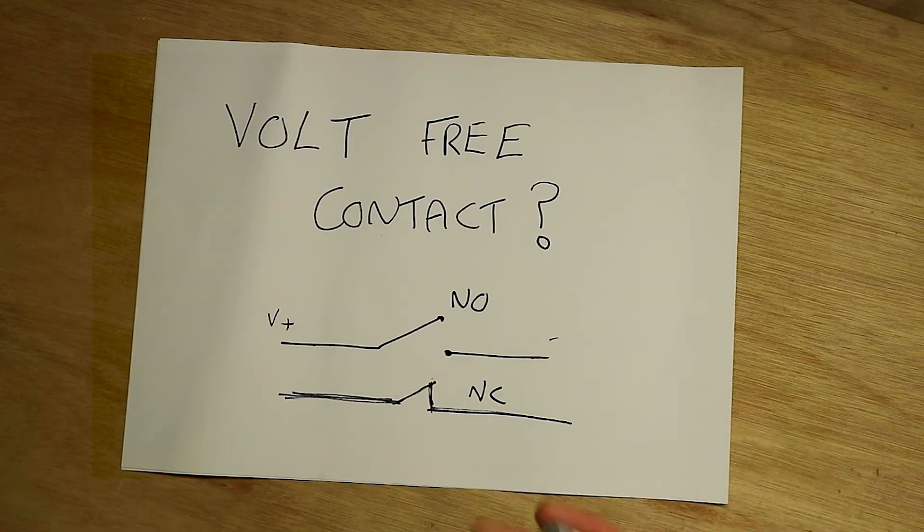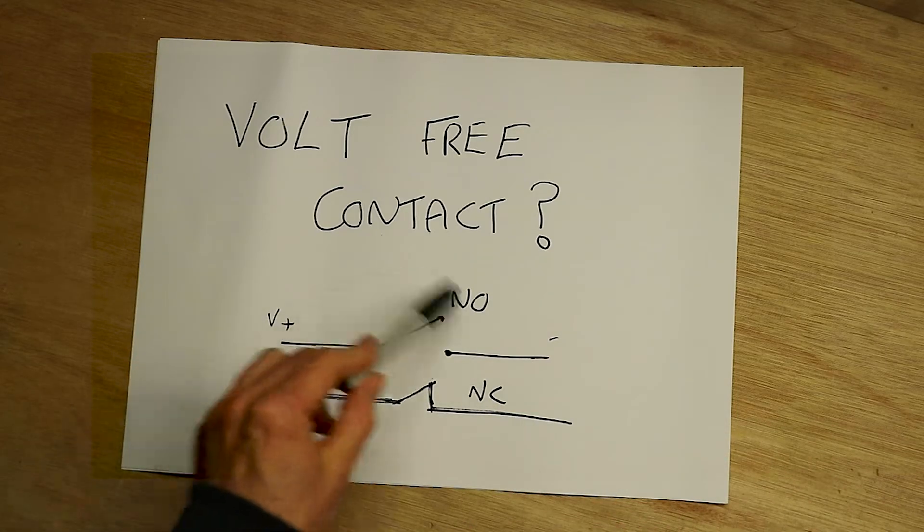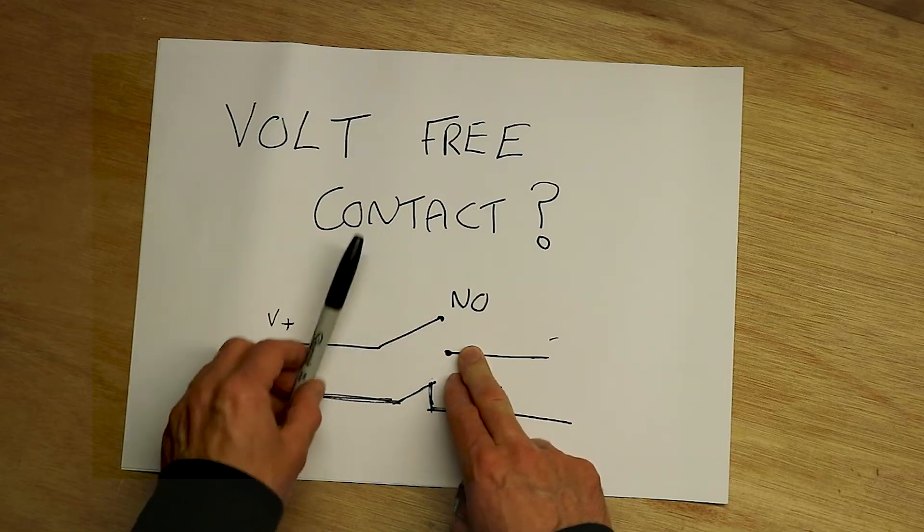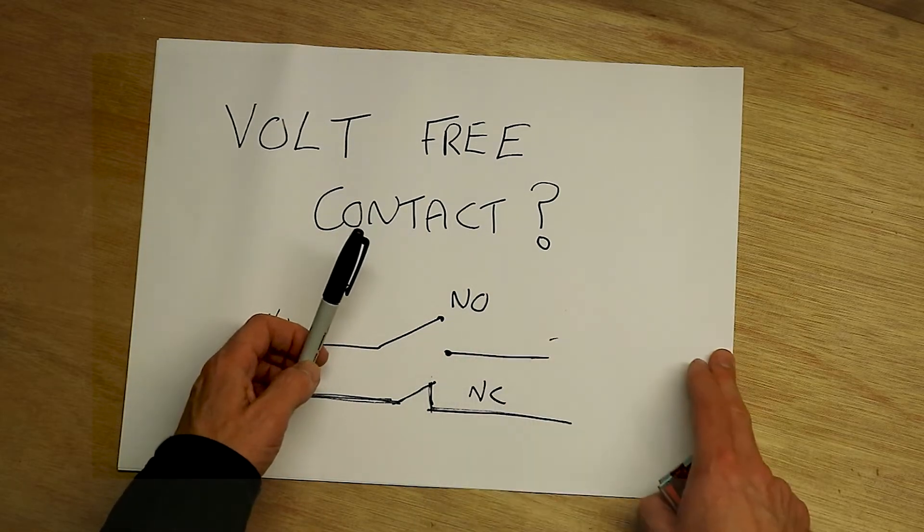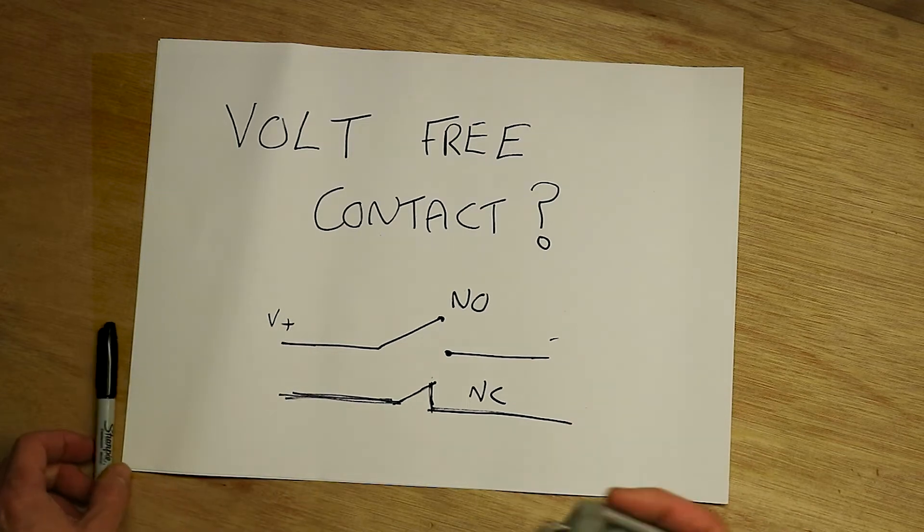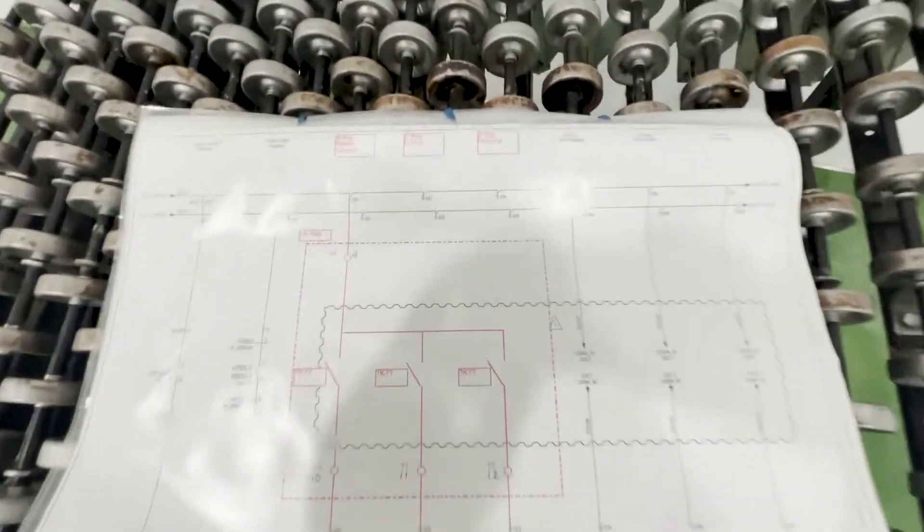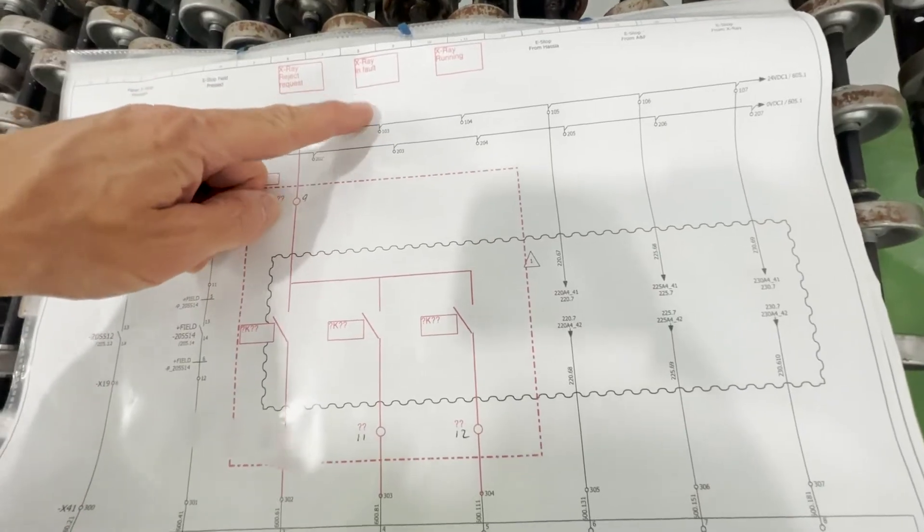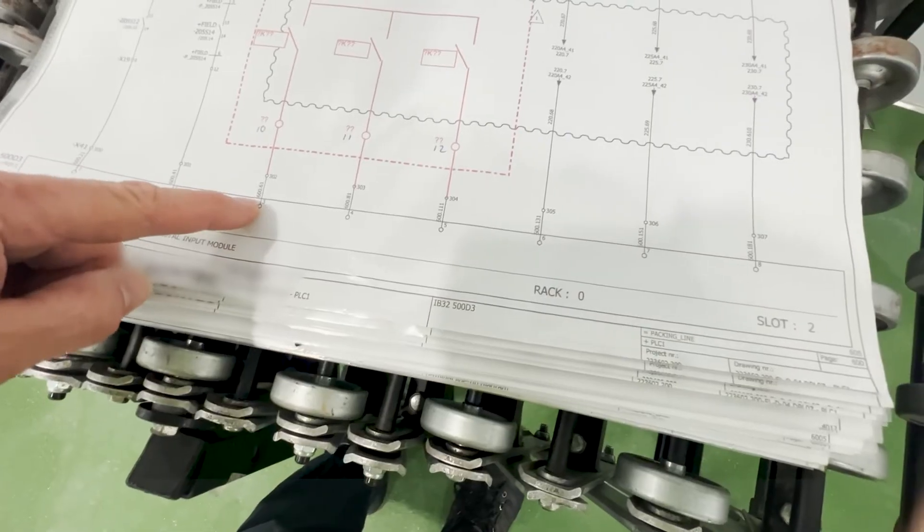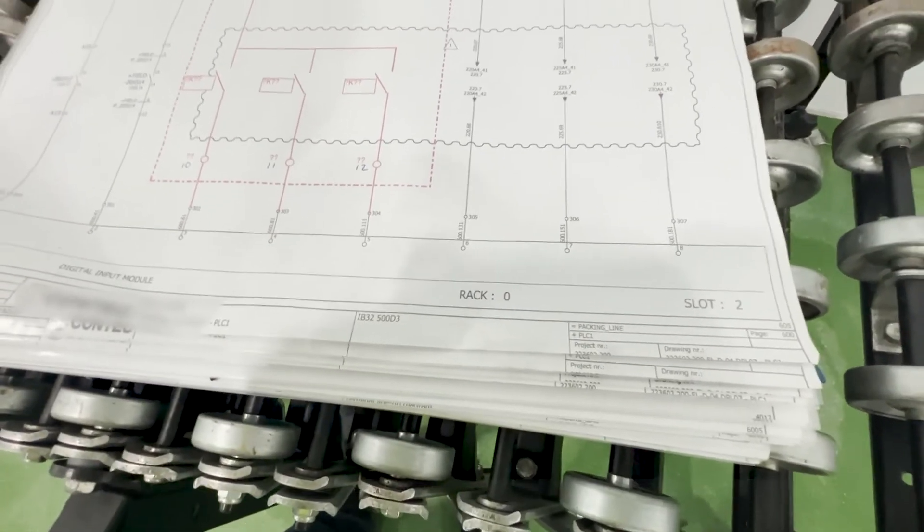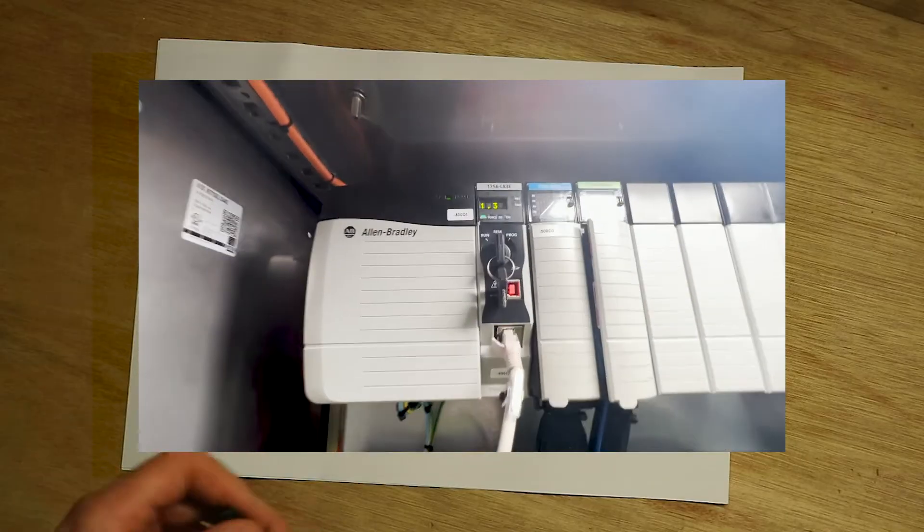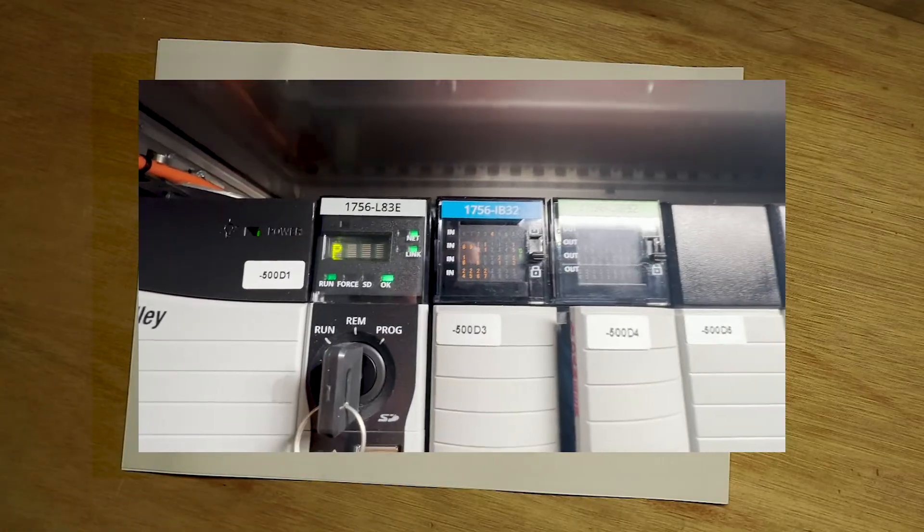And a normally open would be for a control signal. So when our x-ray fires, it closes and gives us a signal. We have 24 volts that is sent through the wiring to our line control panel, and then we have the input card of the PLC which then fires the reject device.